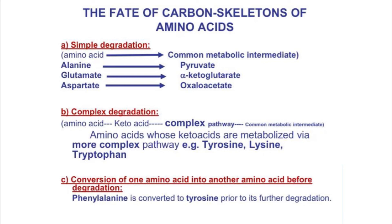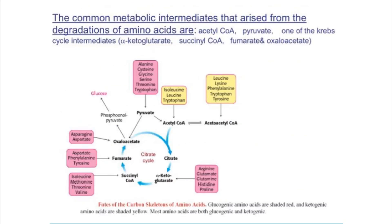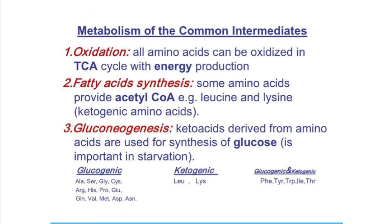These intermediates can help generate ATP or reducing equivalents. For example, alanine, cysteine, and glycine can convert into pyruvate, which can then convert into oxaloacetate and enter the TCA cycle. Amino acids such as isoleucine, leucine, and tryptophan can form acetyl-CoA and other intermediates like fumarate and succinyl-CoA.